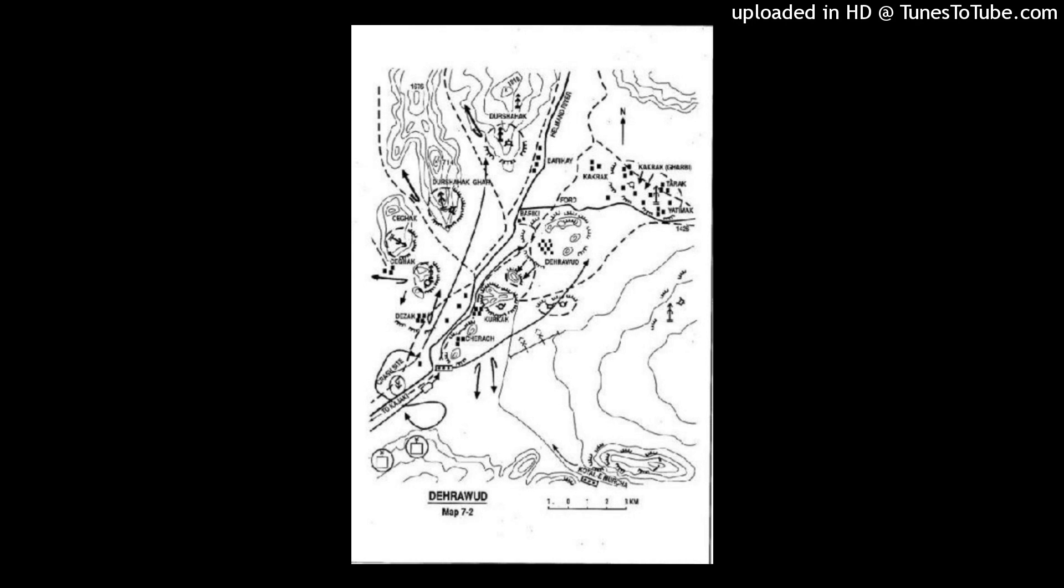Although the Mujahideen groups assigned to cover this approach had left earlier, the terrain did not support tank movement. A Soviet Movement Support Detachment, MSD, used road construction machines and demolitions to open a way through the rocky approaches to Darawood for the tanks and APCs. The Soviets conducted air mobile insertions of soldiers on the heights overlooking the movement route to provide flank security.